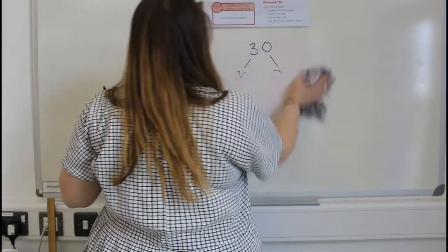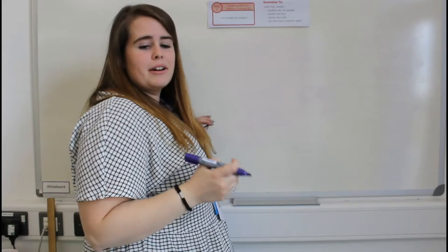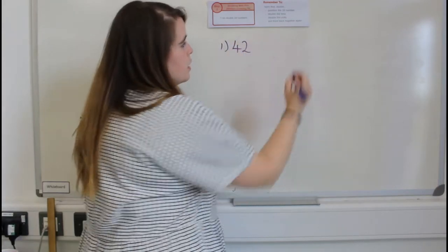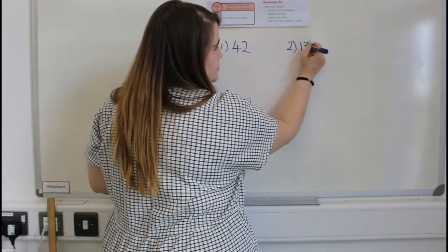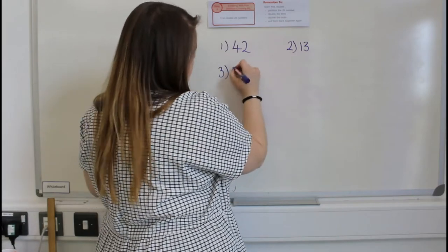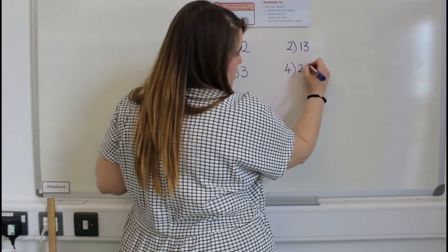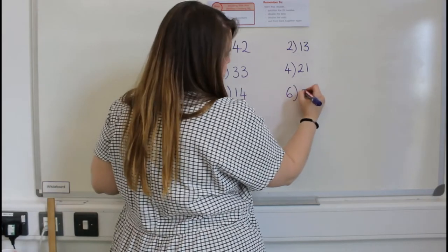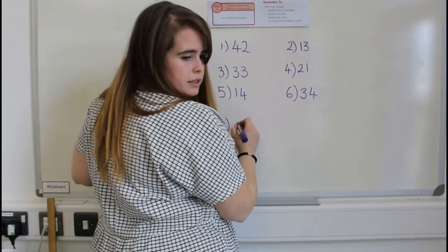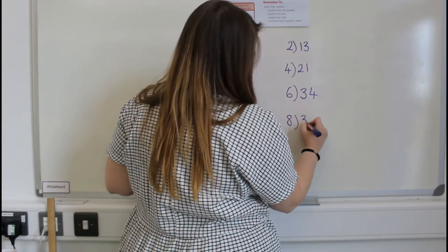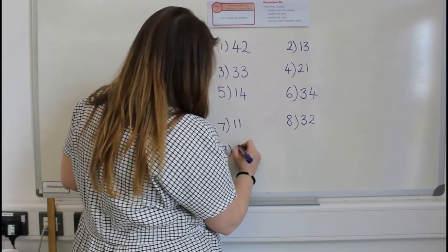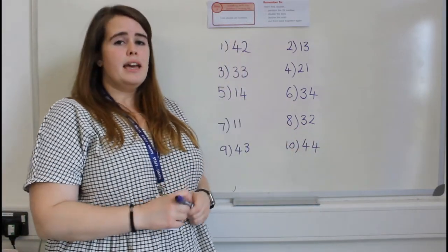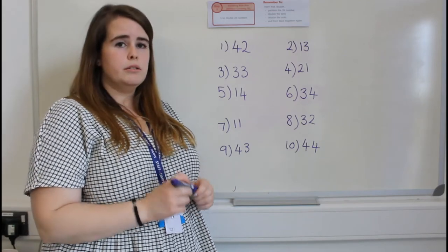Okay, well done. I'm now going to give you ten questions for you to try at home. Number one: forty-two. Number two: thirteen. Number three: thirty-three. Number four: twenty-one. Number five: fourteen. Number six: thirty-four. Number seven: eleven. Number eight: thirty-two. Number nine: forty-three. And number ten: forty-four. Pause the video and see if you are able to double these numbers.